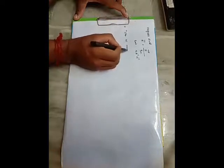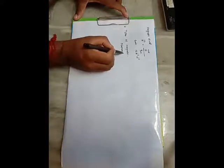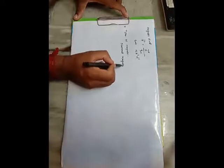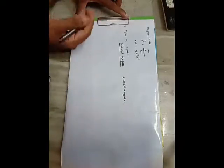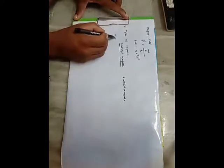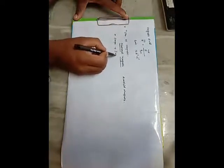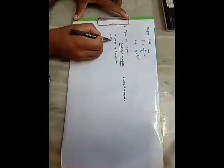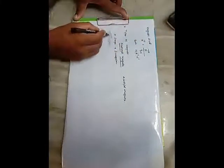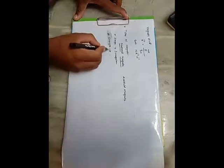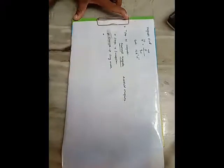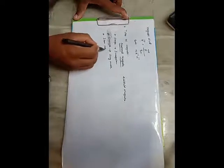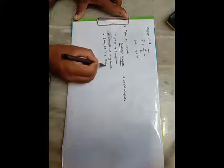The magnets are classified into two types: natural magnet and artificial magnet. Natural magnet means it is naturally obtained from the Earth. The shape of the natural magnet is irregular and the strength of the magnet is very weak. Examples of natural magnets are iron, cobalt, and nickel.